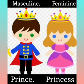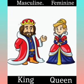Number 5: Prince — feminine is Princess. Number 6: King — feminine is Queen.